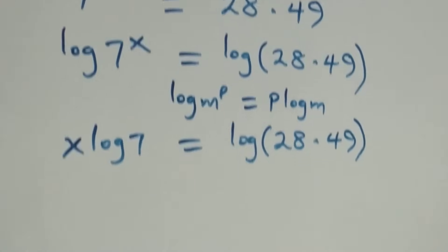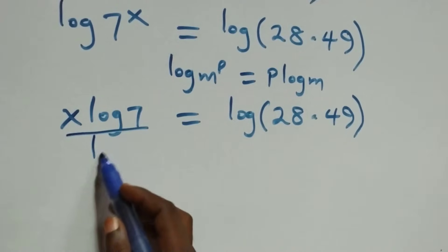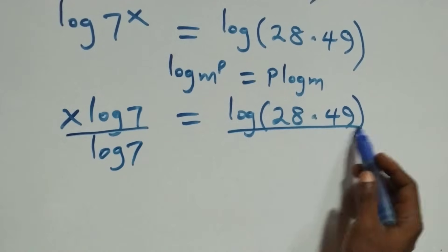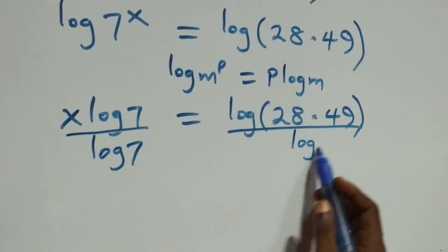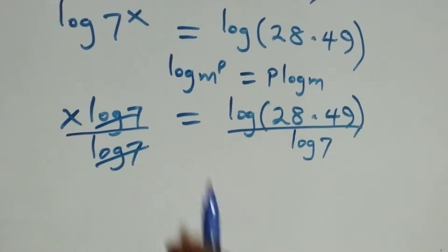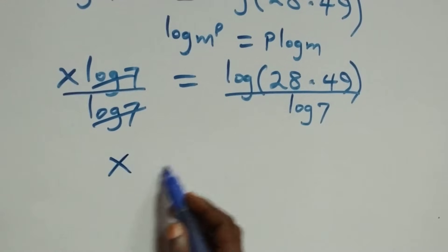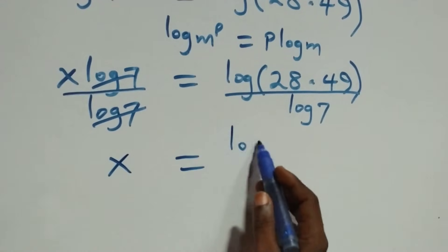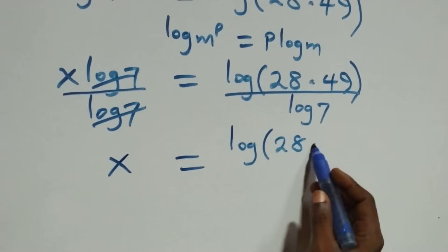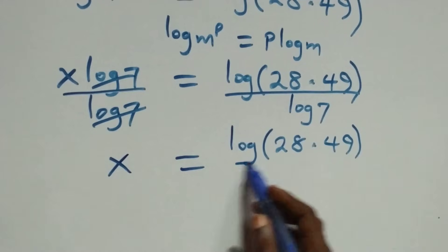Next we divide both sides by log 7. Log 7 cancels on the left-hand side, and we are left with x equals log of 28 times 49 over log 7.